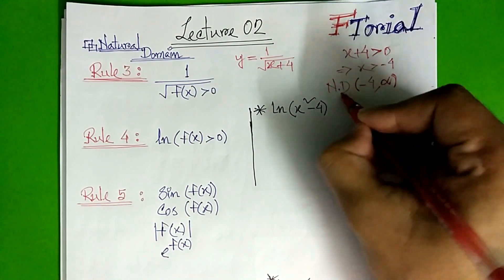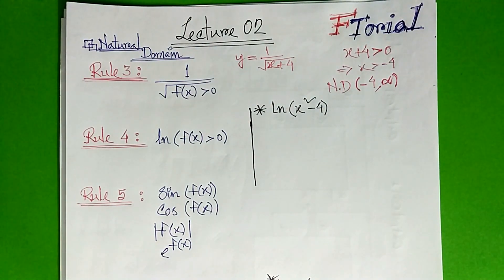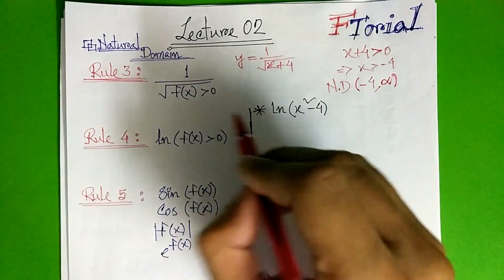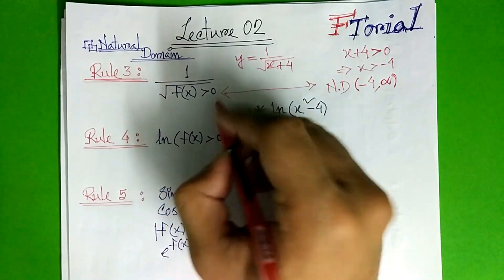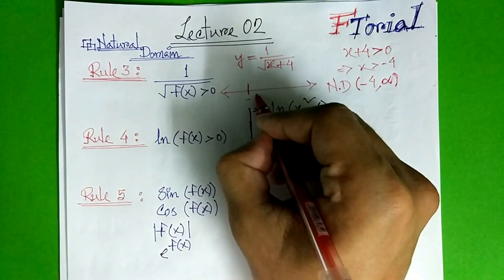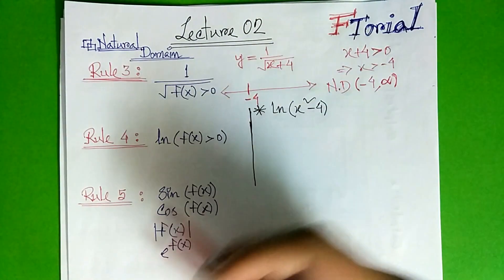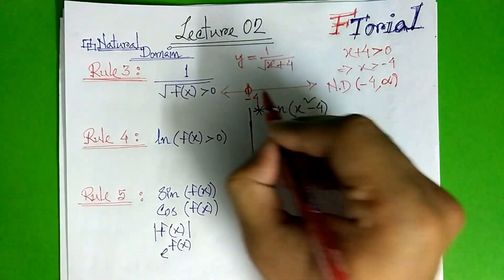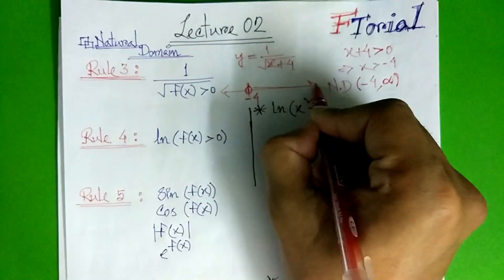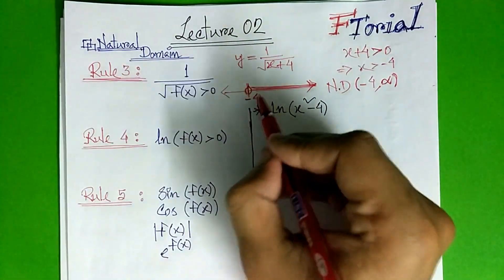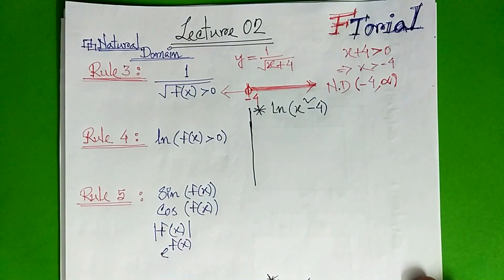So I'm going to show the natural domain. So here we can see the number line. I'm going to show the number line. Here we can see the number line. Here we can see the active point. We can see the number line.